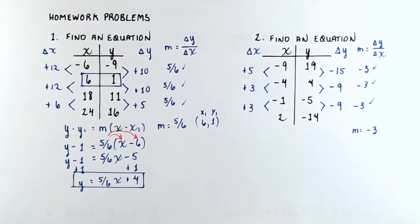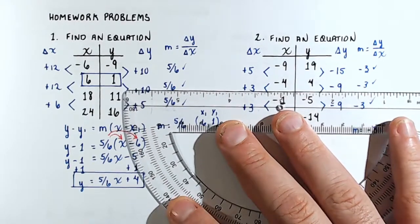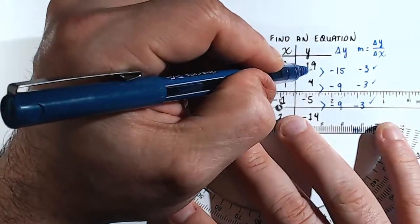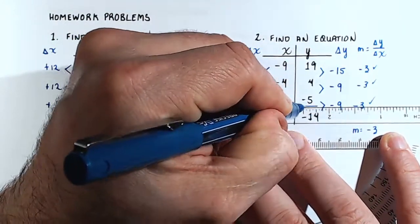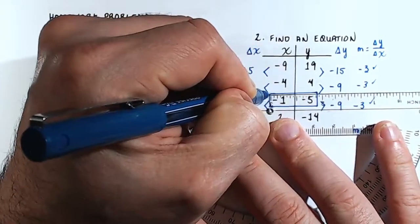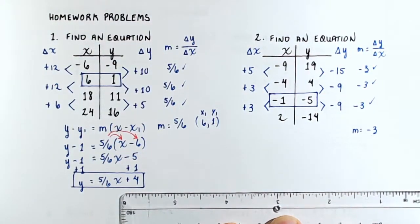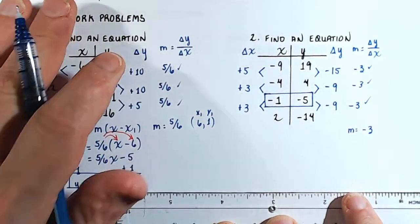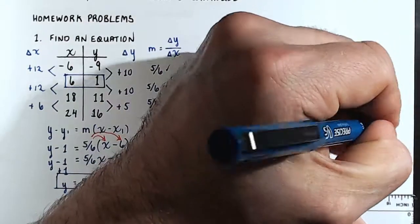Now we compute m as the ratio of the change in y over the change in x. Negative 15 over 5 reduces down to negative 3. Negative 9 over 3 reduces down to negative 3. And negative 9 over 3 reduces down to negative 3. These are the same, so the slope m equals negative 3. Now we just need to choose a point. Negative 1 and negative 5 would be easier to work with — that's the point we'll use. You could have used any point.